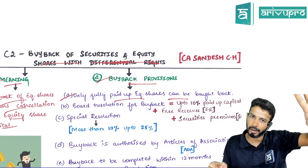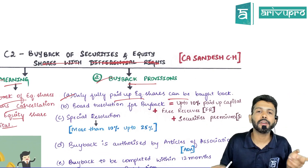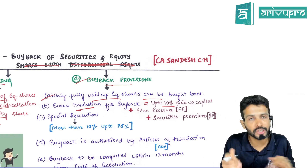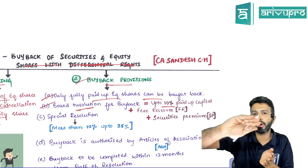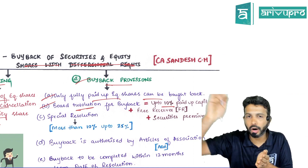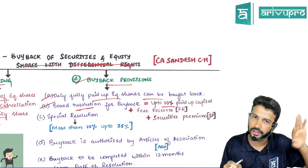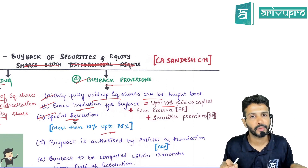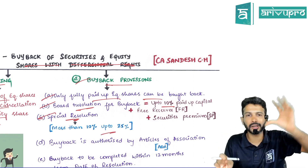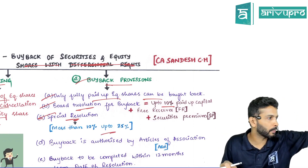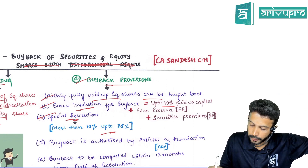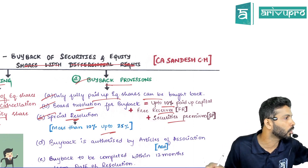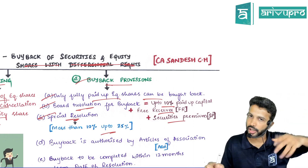Some key buyback provisions: only fully paid-up equity shares can be bought back. If you are doing a buyback up to 10 percent, a board resolution is sufficient. If you want to do a buyback beyond 10 percent of paid-up capital and free reserves, you need to take a special resolution. For this purpose, the limit is 25 percent of paid-up capital and free reserves — and free reserves includes securities premium as well.